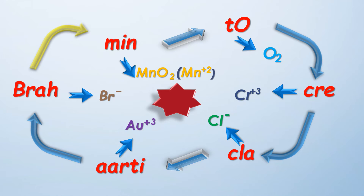आप लोग देख रहे होंगे कि मैंने electrochemical series के elements को किस तरह name किया है। जैसे कि B, R, A — 'Bra' को हमने Br- (Bromine) से denote किया। आगे 'Min' से MnO2 यानी Mn+2 किया। 'Too O' को O2 से denote किया। 'Cre' को Chromium यानी Cr+3 से किया। 'Cla' को Chlorine यानी Cl- से किया। और 'RT' को AU+3 (Gold) से learn किया।